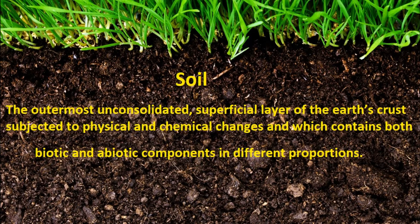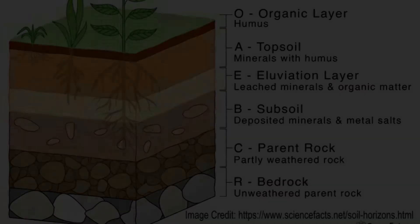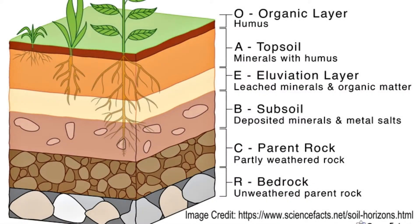Soil is the outermost unconsolidated superficial layer of the earth's crust subjected to physical and chemical changes, and which contains both biotic and abiotic components in different proportions. It is usually differentiated into horizons of minerals and organic constituents of variable depths. In brief, soil can be defined as that region on the earth's surface where geology and biology meet.